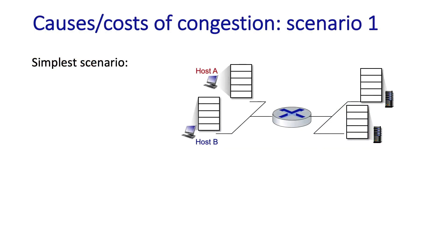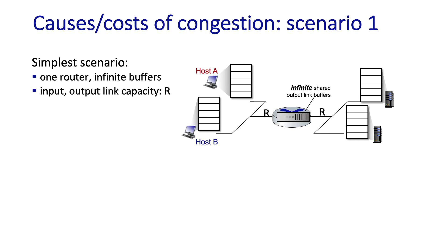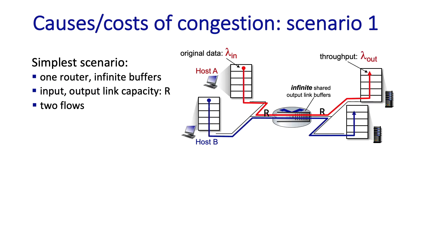Let's dive into the causes and costs of congestion by starting with a simple idealized scenario, then adding increasingly more realistic assumptions. We'll look at the case of a single router where congestion will occur, and first assume there's an infinite amount of buffering. The router has input and output links of capacity R bits per second, and there are two flows: the red flow and the blue flow.